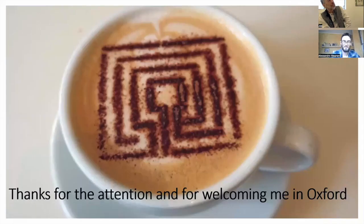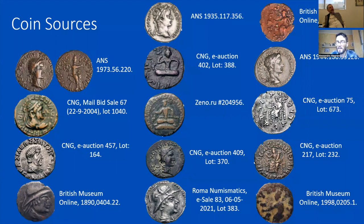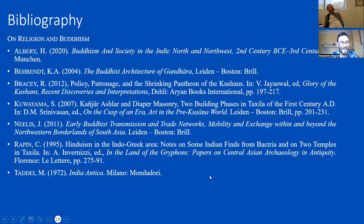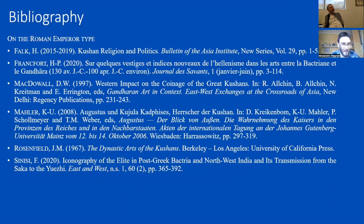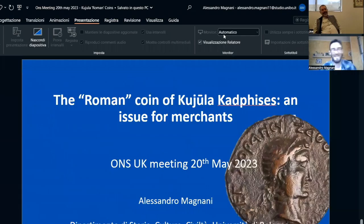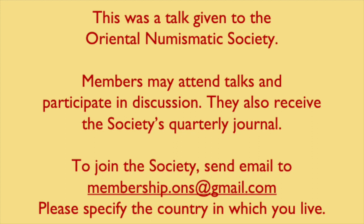So that's it. I hope I have given you something to think about, and I wanted to thank you for your attention and for welcoming me in Oxford and allowing me to speak with you about my first love in the research of the Kushan Empire. The point sources for the images, and the bibliography on religion and Buddhism, on the economy and coinage, and also on the Roman Emperor type and on Taxila, are listed here. Thank you very much.